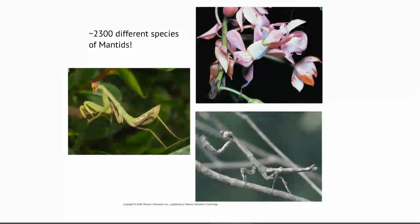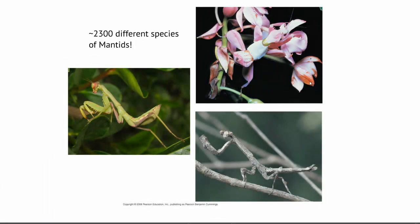Here are two other species of mantids. This is a flower mantid, and here we have a stick mantid — same big eyes, front grabbing legs, thorax and abdomen. Notice that they fit in perfectly in their environment; if they don't move they're going to be very hard to see.